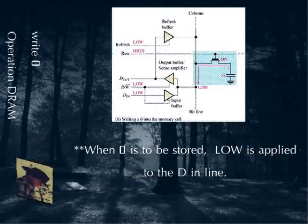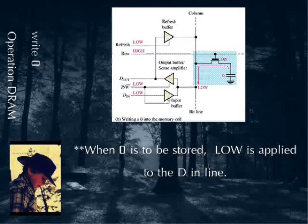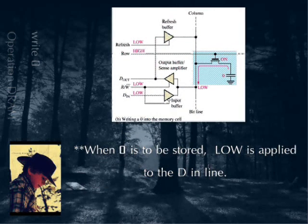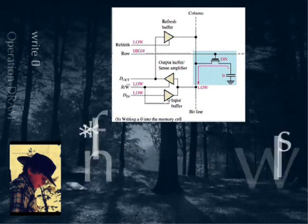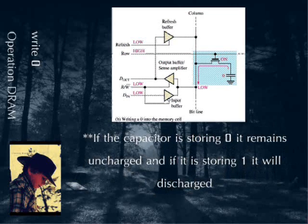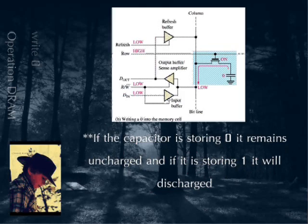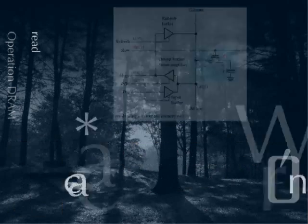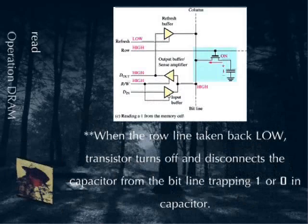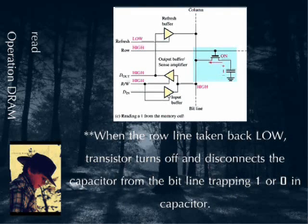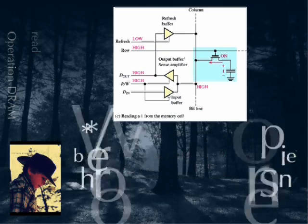The transistor acts as a closed switch, connecting the capacitor to the bit line and allowing it to be charged with positive voltage. When a 0 is to be stored, a low is applied to the DIN line. If the capacitor is storing 0, it remains uncharged; if it is storing 1, it will discharge. When the row line is taken back low, the transistor turns off and disconnects the capacitor from the bit line, trapping 1 or 0 in the capacitor.